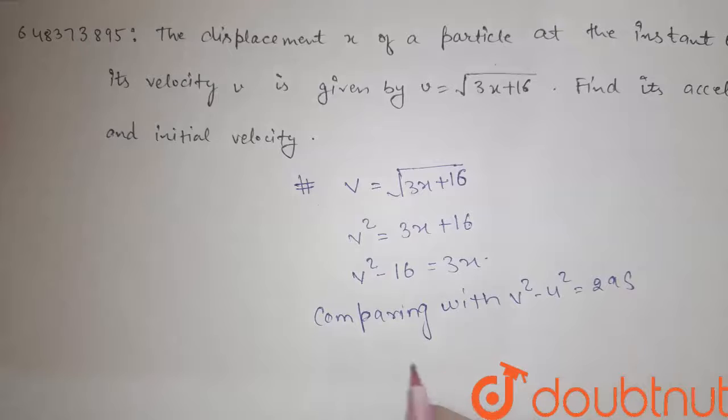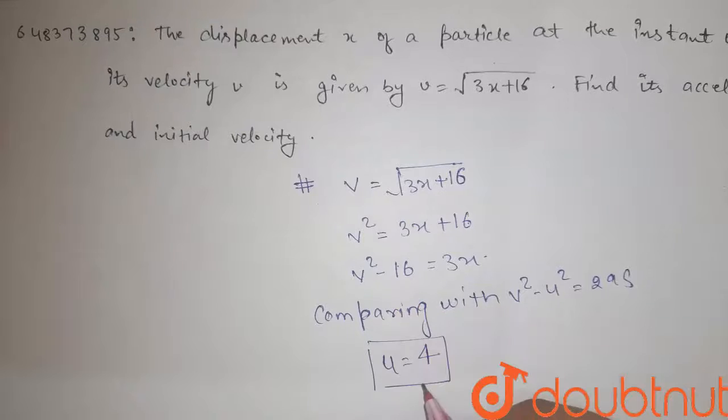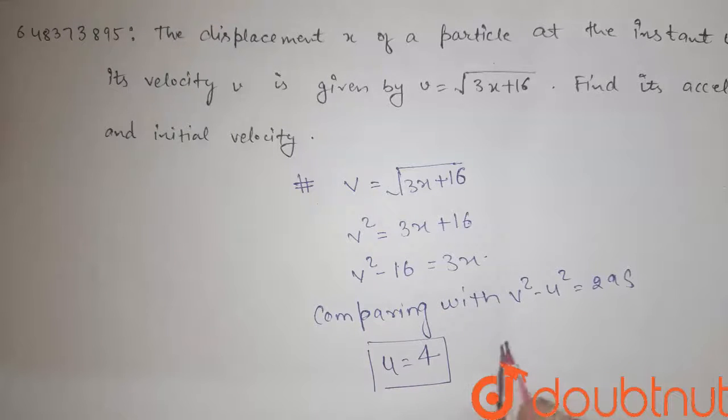So we get the value of u is 4, because from this equation, u squared equals 16. So the initial velocity is 4.